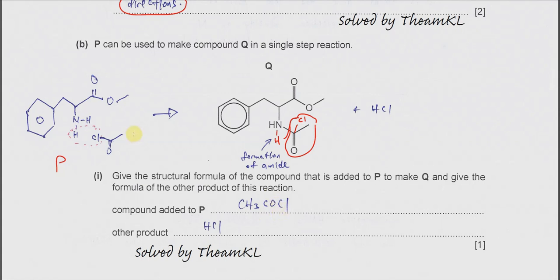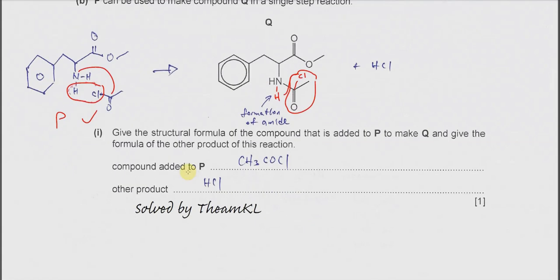The amine group reacts with ethanoyl chloride in a condensation reaction. H from the amine and Cl from the ethanoyl chloride react and form HCl, and the N forms a new bond with C to form the amide. So the compound added to P to make Q is ethanoyl chloride, and the side product is HCl.